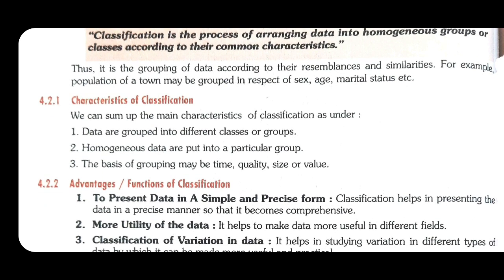Characteristics of classification: Data is grouped into different classes or groups on the basis of different characteristics. Homogeneous data is put into a particular group. The basis of grouping can be time, quality, or size — جیسے time کے basis پر سال 2020 کا الگ group؛ quality کے basis پر gender یا subject؛ size کے basis پر medium، small، large، extra-large الگ الگ۔